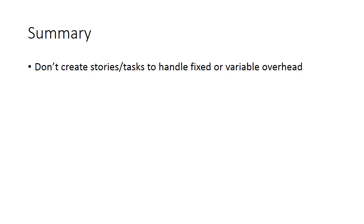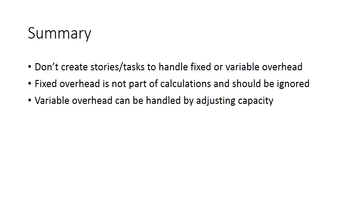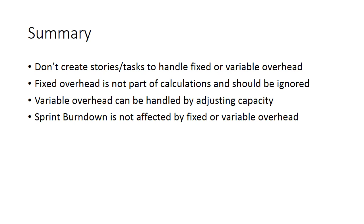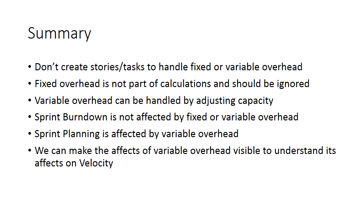To sum this up: don't create stories or tasks to handle fixed or variable overhead. Fixed overhead is not an ongoing part of calculations and can largely be ignored. When you have variable overhead, adjust your capacity to properly adjust the velocity. The sprint burndown is not affected by fixed or variable overhead. Sprint planning is only affected by variable overhead, and we can use capacity to make those adjustments. We can also make the effects of variable overhead visible with an appropriately designed chart. I'm Jim Brisson. Thanks for watching.